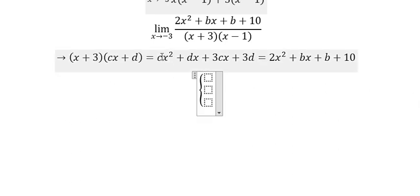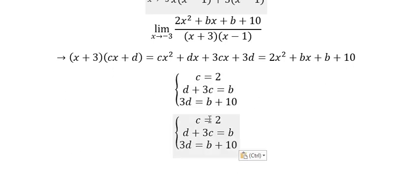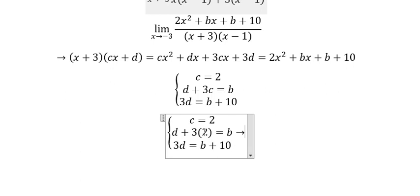Now we can set up a system of equations by comparing coefficients. We have c equals 2 from the x² terms. We have d plus 3c equals b from the x terms. And 3d equals b plus 10 minus 3d minus b equals 10. Now let's calculate. Putting c equals 2 into the second equation: d plus 6 equals b, so d minus b equals negative 6.